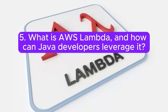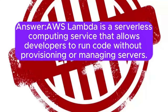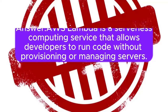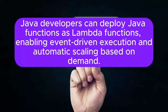Question 5: What is AWS Lambda, and how can Java developers leverage it? AWS Lambda is a serverless computing service that allows developers to run code without provisioning or managing servers. Java developers can deploy Java functions as Lambda functions, enabling event-driven execution and automatic scaling based on demand.